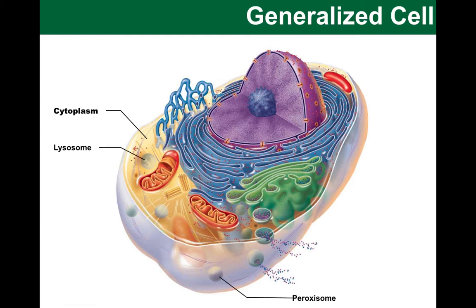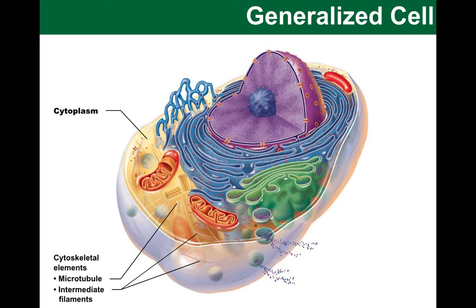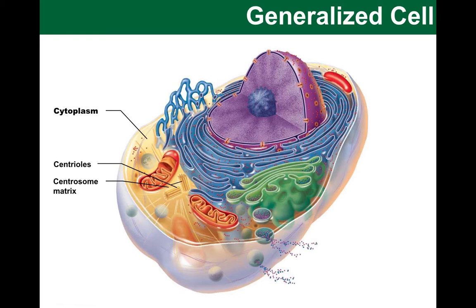Then we have a variety of vesicles, and of course the cytoskeleton. This contains different kinds of tubules and filaments that provide both structural support as scaffolding, but also serve as a transportation system — the highways of the cell that other structures can travel along. Finally, I want to mention the centrosome and centrioles, which are especially important in cell division. I expect that you are familiar with these from your past studies.